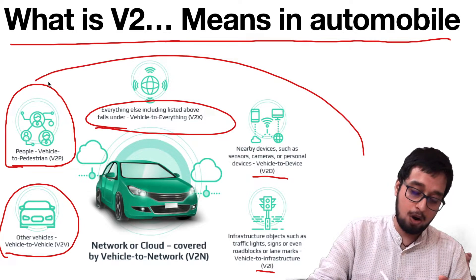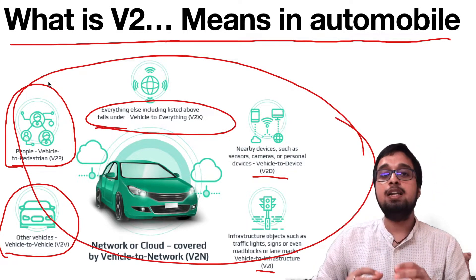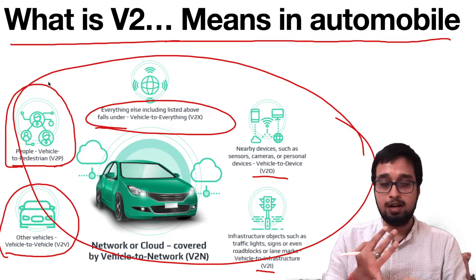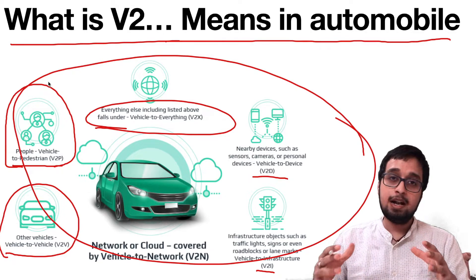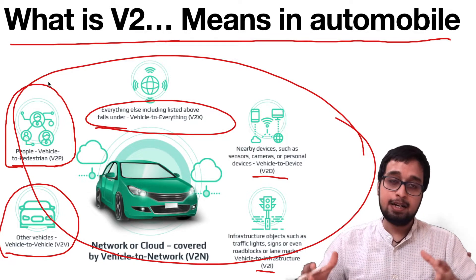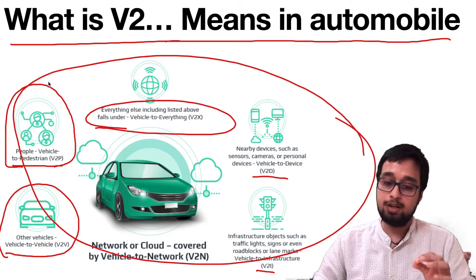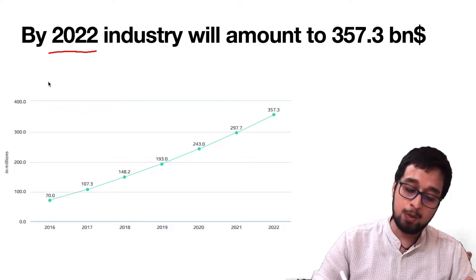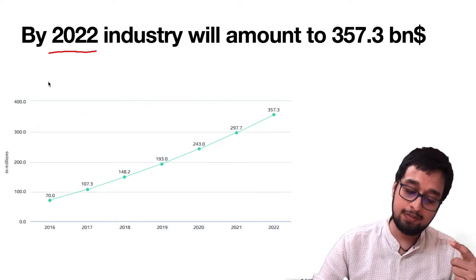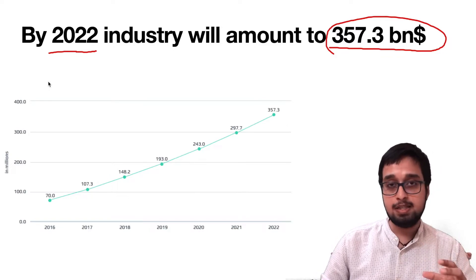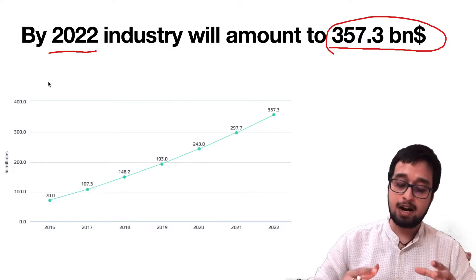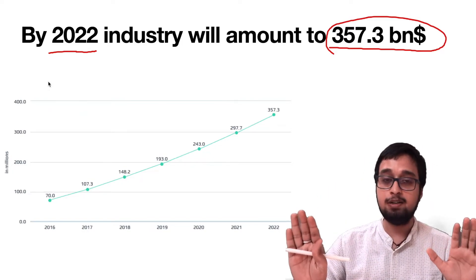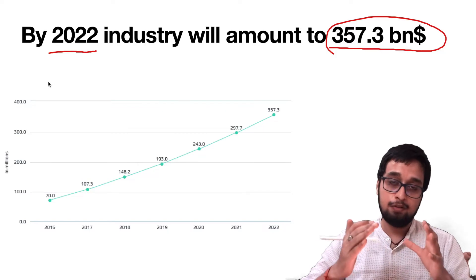V2x is basically considered to cover all the ecosystems your vehicle can communicate with — V2d, V2i, V2p, and V2v. It includes all the environments the vehicle can communicate with, and this market is growing at a very good pace. Talking about its growth, by 2022 it would be valued at about $357.3 billion, showing the amount of opportunity this industry has, especially connecting the automobile sector and the communication sector together.